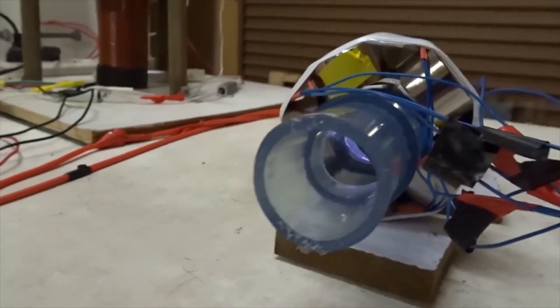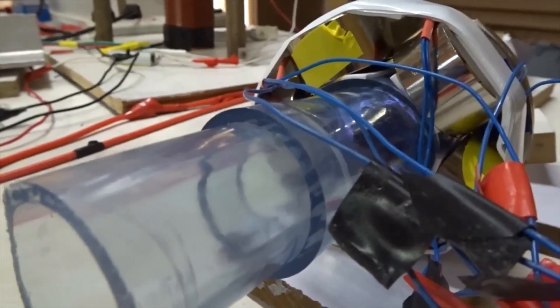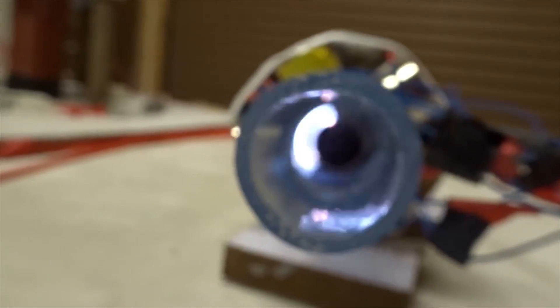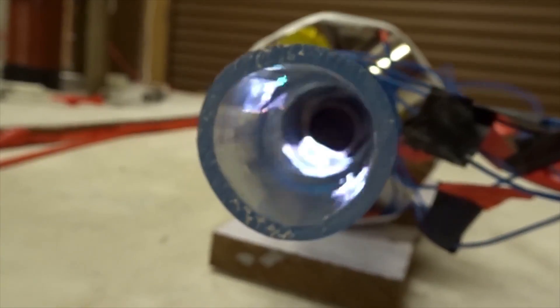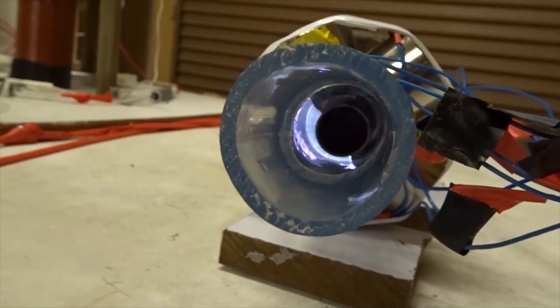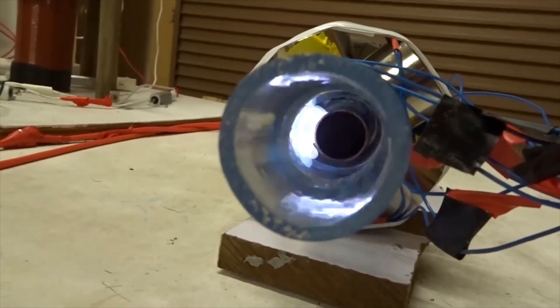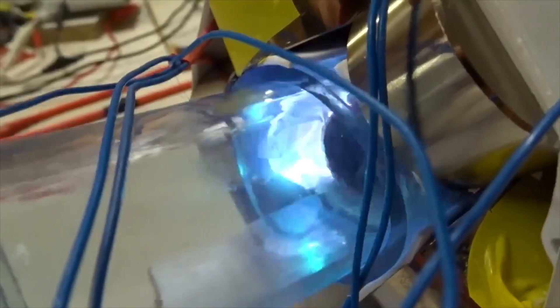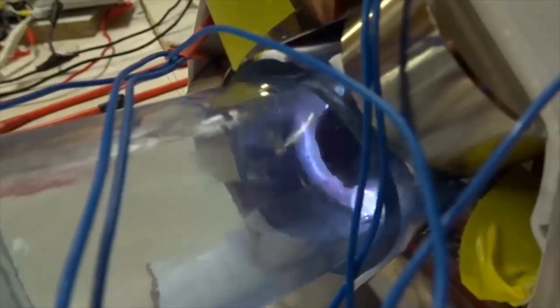Now when we turn on DC power to those electromagnets, you can see this big radial force to shoot things out. On, off, on, off, on, off.